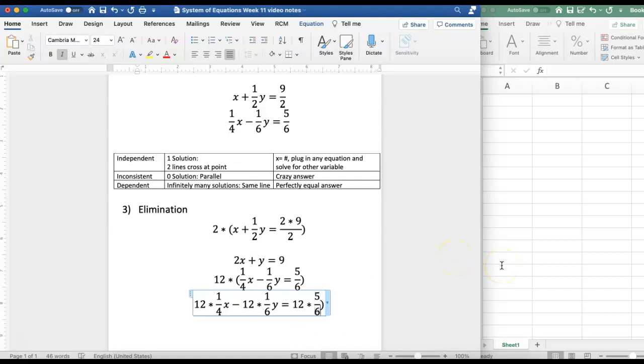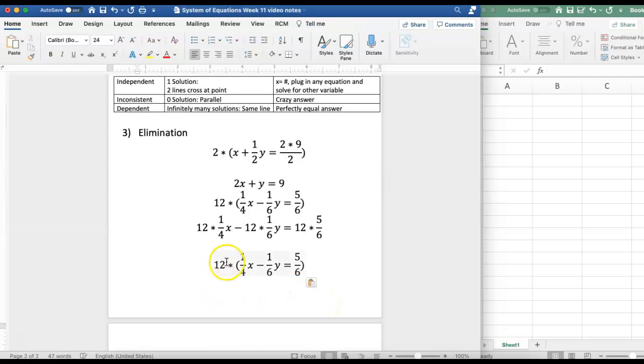Doing the distributive that will be 12 times every single term and because I've now distributed it to every single term I'm going to take off the parentheses and work with each term individually. 12 times 1 is 12 divided by 4 is 3 or you can just think of 12 divided by 4 which is 3 times 1 which is 3 so we end up with 3x.